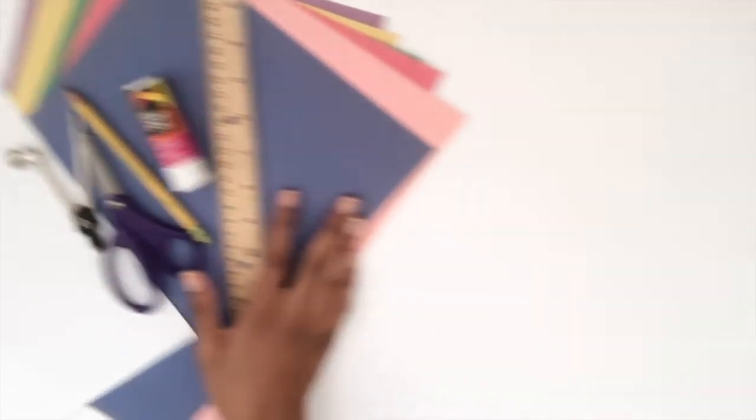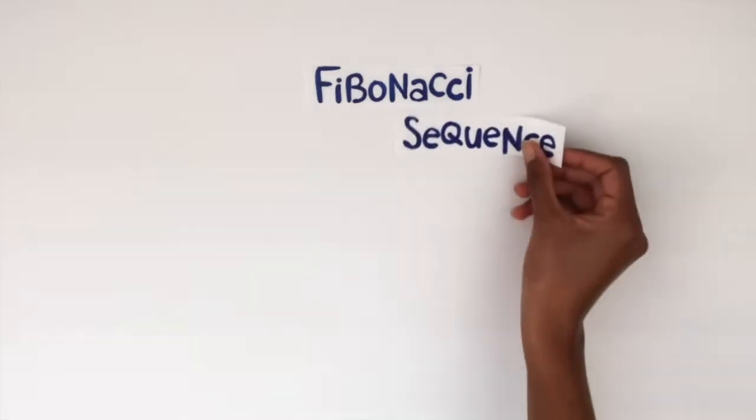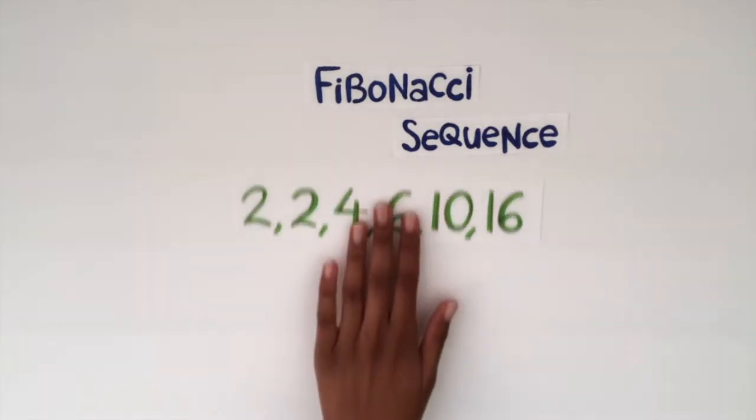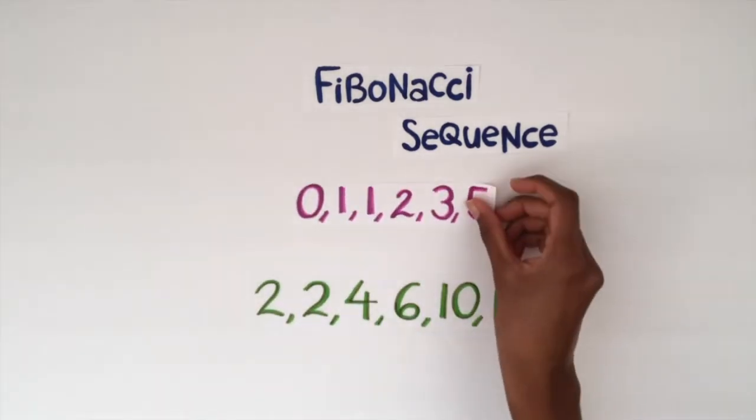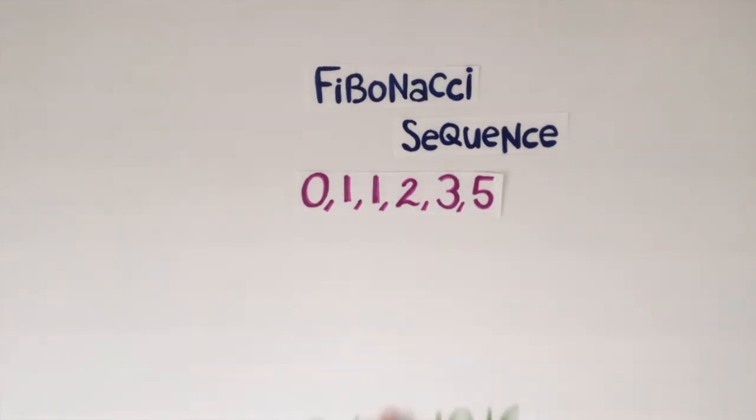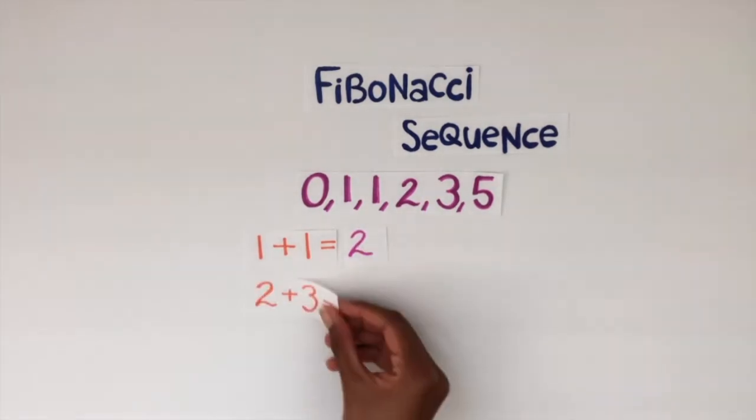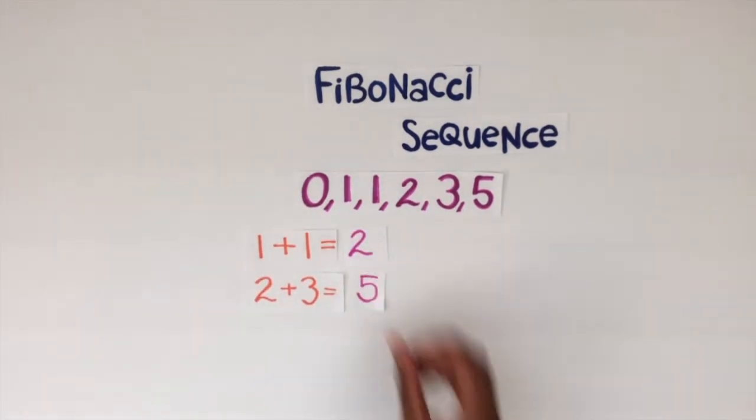But first, let's look at the Fibonacci sequence. Believe it or not, the sequence I showed you in the beginning has the same pattern as the Fibonacci sequence. The term is always the sum of the two before it. For example, 1 plus 1 is 2, and that's why 2 is the next term. 2 plus 3 is 5, so the next term is 5, and so on.